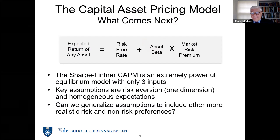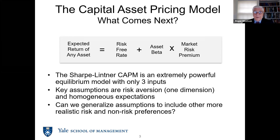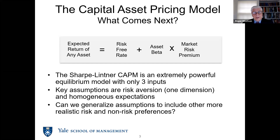Let's start with the capital asset pricing model. It's actually a wonderful model. The expected return is really the sum of the risk-free rate plus beta times the market risk premium. This is really very nice — it's only three inputs. The risk-free rate you can look up, the asset beta we can calculate, and the only really controversial part is what is the equity market risk premium.